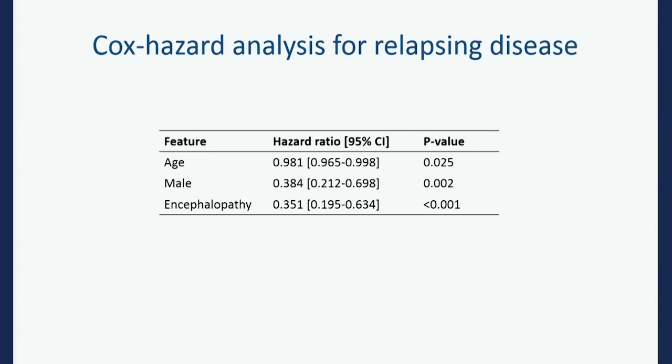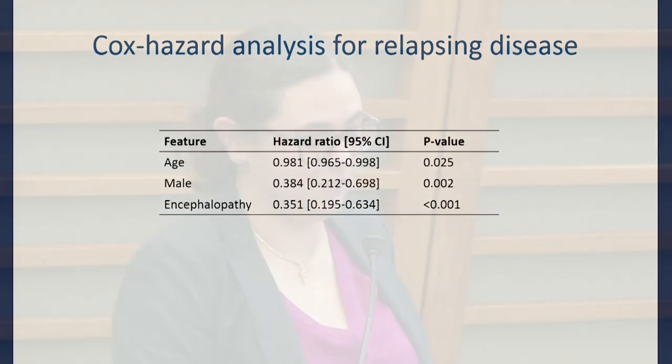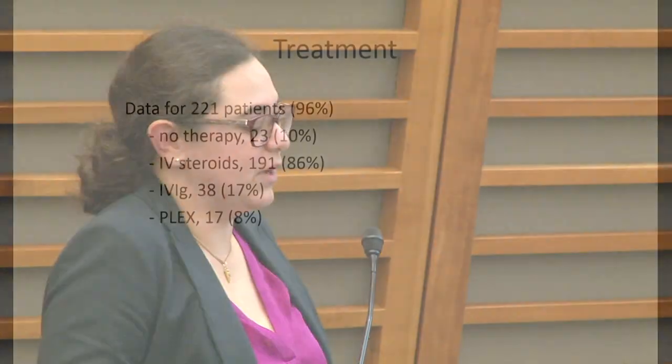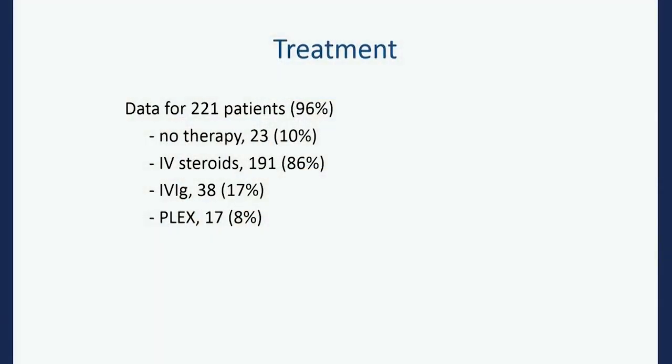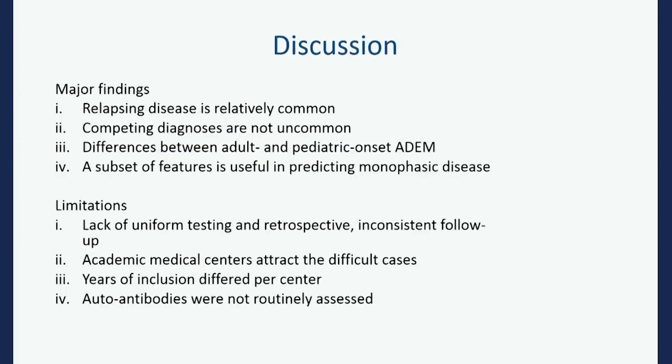People with no encephalopathy are more likely to relapse. Taken together, if you are younger, female, and don't have encephalopathy, you're more likely to relapse long-term. This is not set in stone, but we're trying to tease out real risk factors for future disease activity. In our cohort, IV steroids were the standard; some got IVIG and plasma exchange, but importantly 10% received no treatment whatsoever.